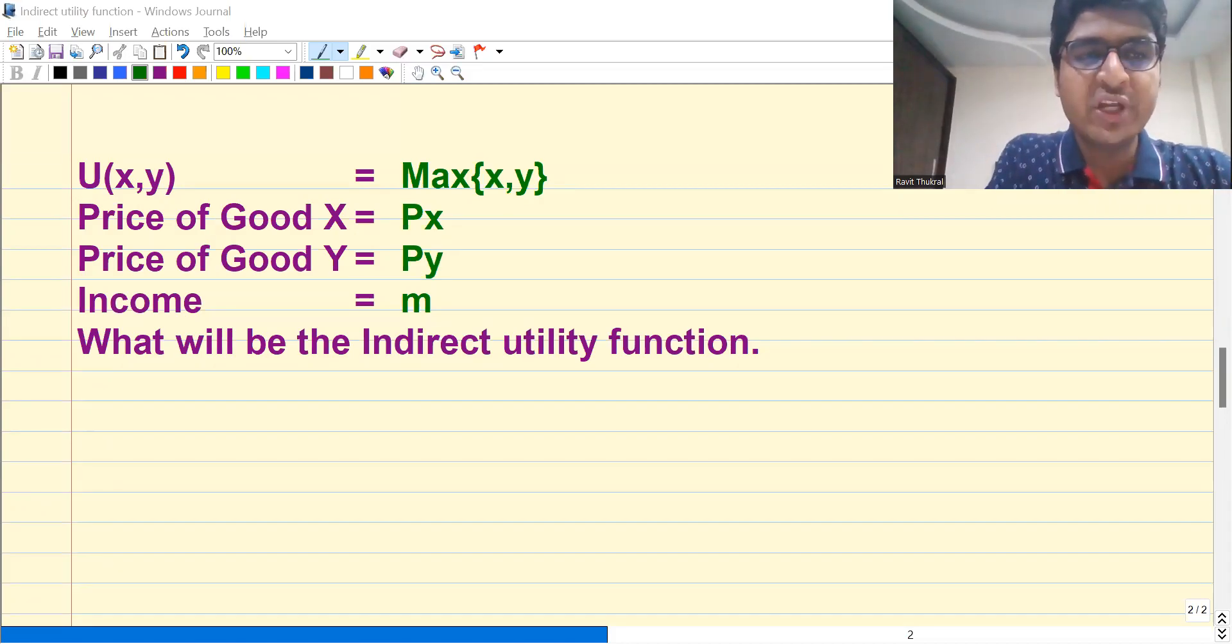Hi, the question is you are given a utility function which is max of X and Y. Price of good X is Px, price of good Y is Py, income is m, and you need to find the indirect utility function. So how do you do that?